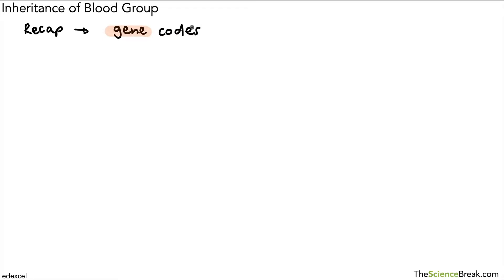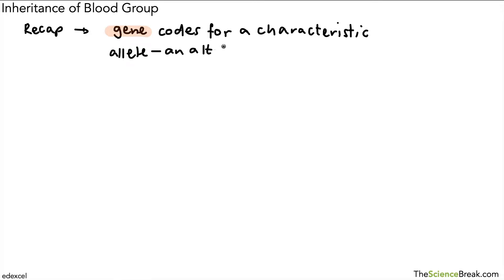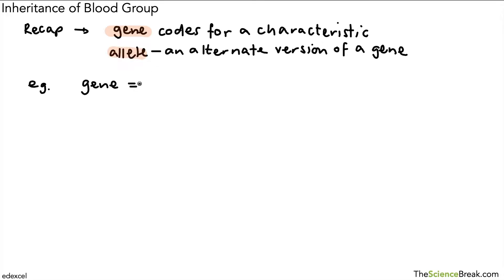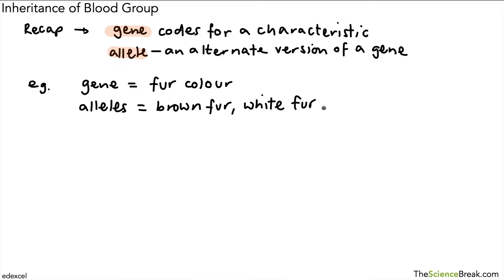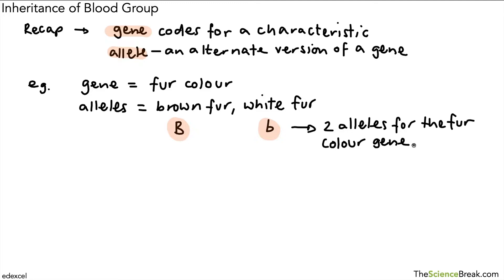A gene codes for a characteristic. Genes have alleles — alleles are an alternate version of a gene. For example, we can have the gene for fur color in mice. The gene is for fur color but the alleles are brown fur and white fur. We use capital B for brown and small b for white. In this example there are two alleles for the fur color gene: brown and white.